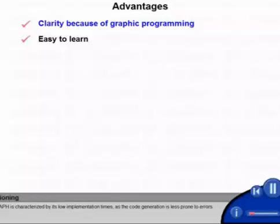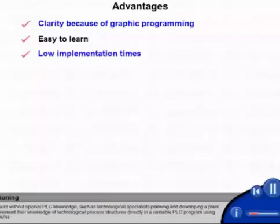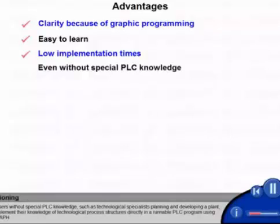S7 Graph is characterized by its low implementation times as the code generation is less prone to errors. Also, users without special PLC knowledge such as technological specialists can implement their knowledge of technological process structures directly in a runnable PLC program using S7 Graph.